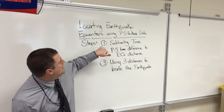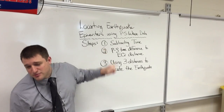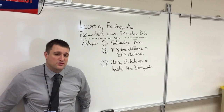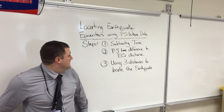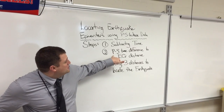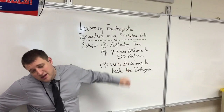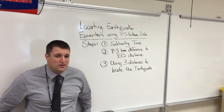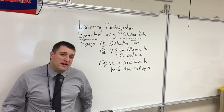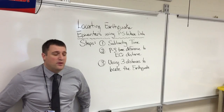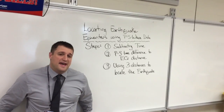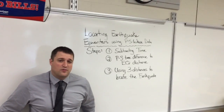We're breaking it into three steps. First one is subtracting time — you're going to get a P and an S wave time and need to subtract those to get a P-S wave difference. Then for step two, you're going to convert that to an earthquake distance using the earthquake slide. Finally, you're going to have three distances from three different stations and use those to find the exact location of the earthquake.